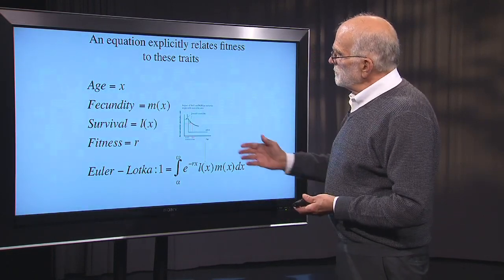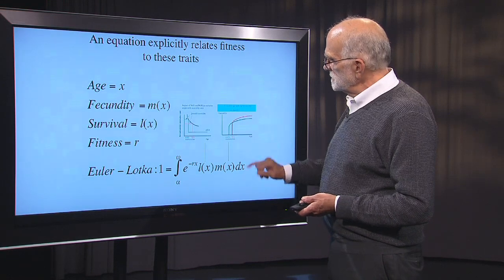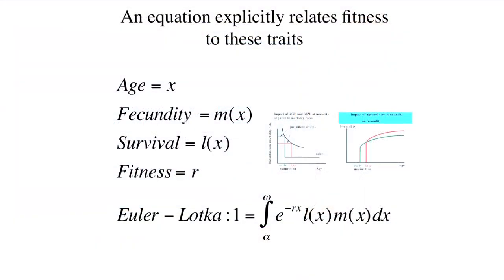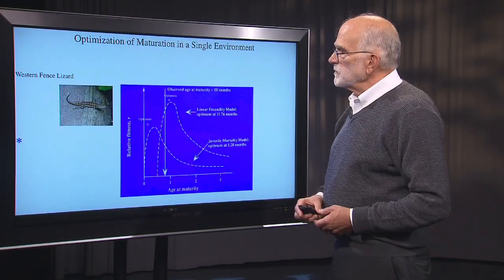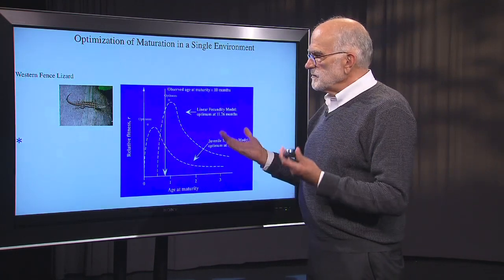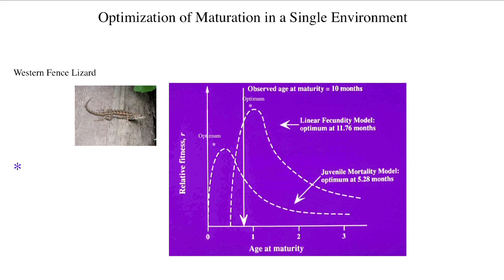If we take the juvenile mortality assumption, we can build it into the survival term in the equation. We then have an equation where we can look at the relationship between fitness and changes in age at maturity, letting juvenile mortality and fecundity both change as a function of age at maturity. Here's an example for the western fence lizard, optimizing age at maturity in a single environment. If we apply just the juvenile mortality assumption, we get one relationship between fitness and age at maturity; applying just the fecundity assumption gives another. In fact, both are probably operating, and the actual age at maturity indicated by the arrow shows that the linear fecundity model comes quite close to predicting the observed age at maturity.